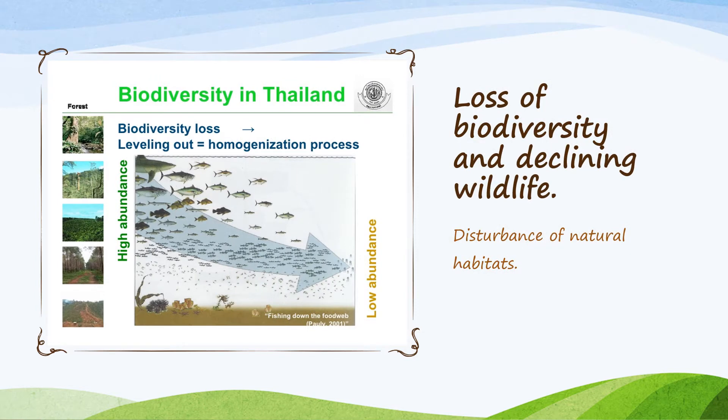This picture shows biodiversity in Thailand. Loss of biodiversity and declining wildlife — how? Disturbance of natural habitats. You can see in this picture that high abundance of resources like fish in rivers or at sea has become low abundance.